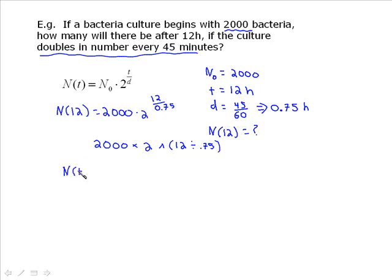Not really that surprising when it's doubling every 45 minutes. So I'm getting 131,072,000 bacteria. So it is a very rapid growth.